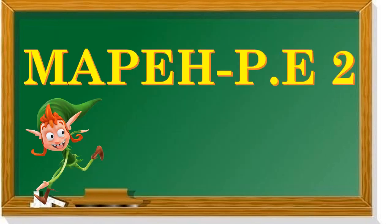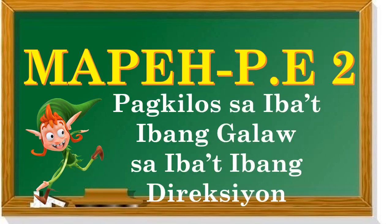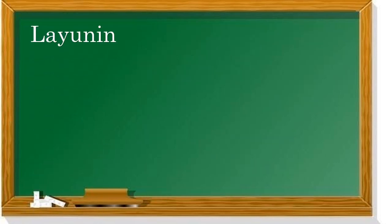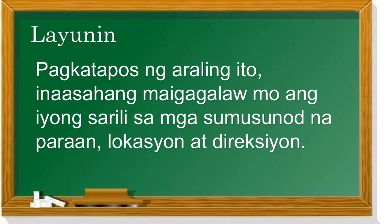Ang ating subject ay MAPE PE para sa Grade 2. Ito ay ang ating topic: pagkilos sa iba't ibang galaw sa iba't ibang direksyon. Ito ay second quarter, week 3 to 4. Ang layunin sa araling ito ay, pagkatapos ng araling ito, inaasahang maigagalaw mo ang iyong sarili sa mga sumusunod na paraan: lokasyon at direksyon.